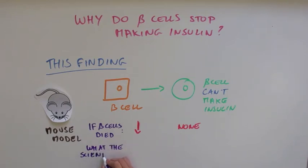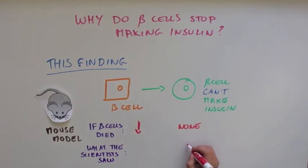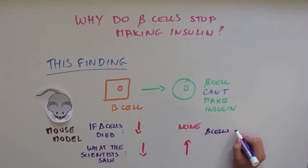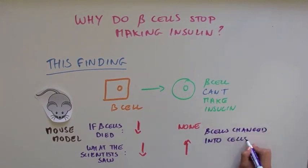In contrast, the authors saw that the number of green cells was actually going up with beta cell failure. This means that beta cells were losing their ability to make insulin. The beta cells weren't dying at all, but they were changing into cells that don't produce insulin.